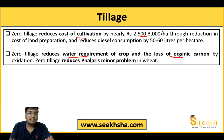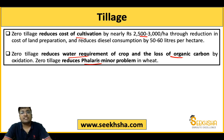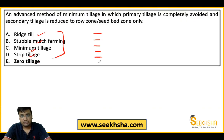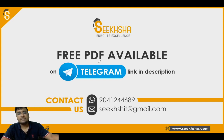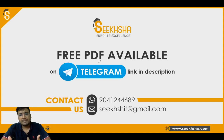Zero tillage has multiple benefits and every point can become an exam question. As homework, please write in the comment section — in one line each — the definitions of ridge till, stubble mulch farming, minimum tillage, and strip tillage. I'll tell you if your answers are correct. Today's session ends here; we'll continue in the next lecture. PDF is available on Telegram, and the MCQ course free test link is in the description. Take care and bye!